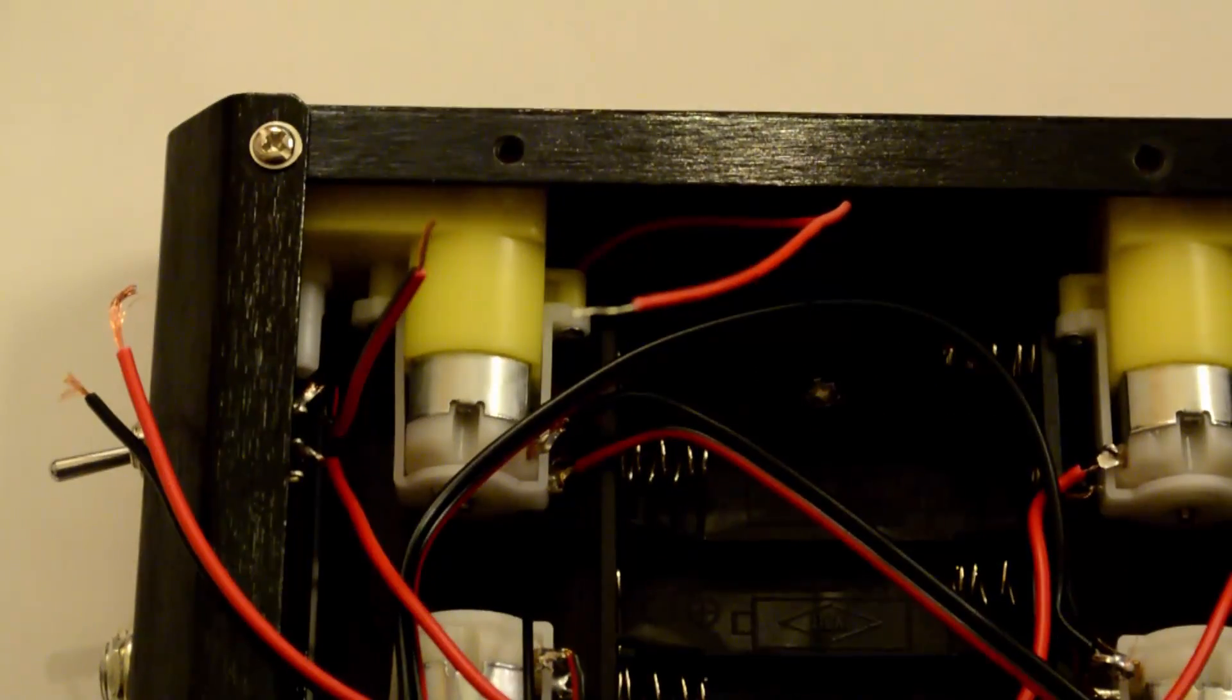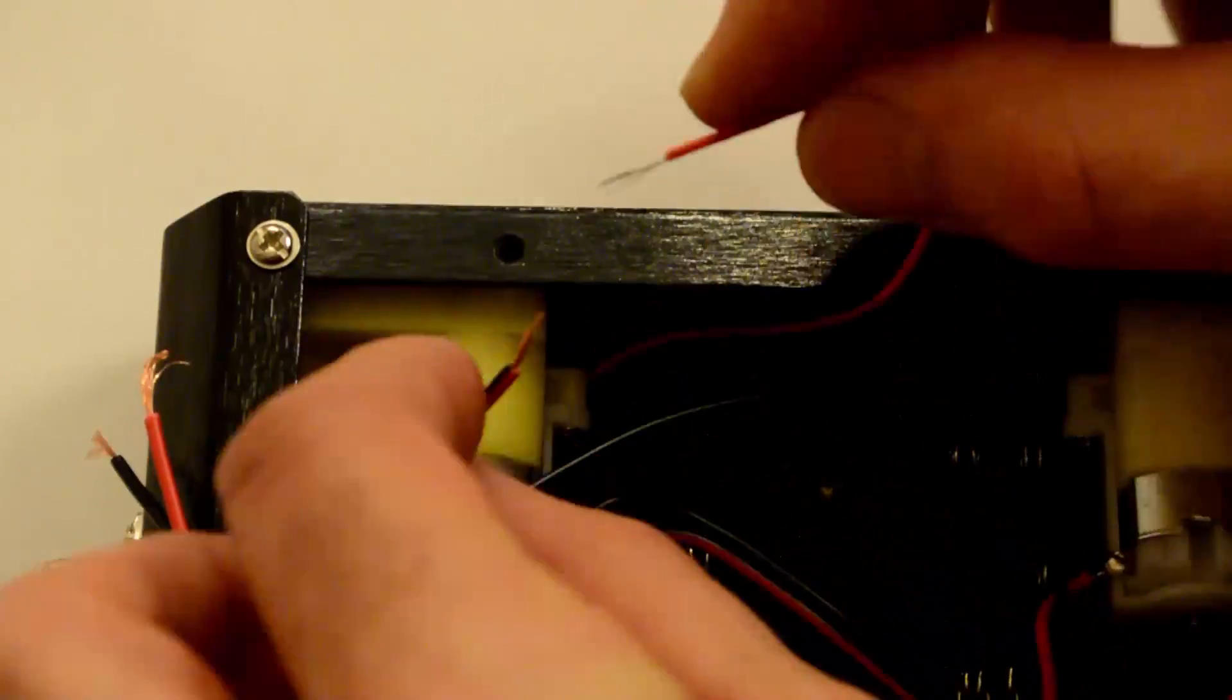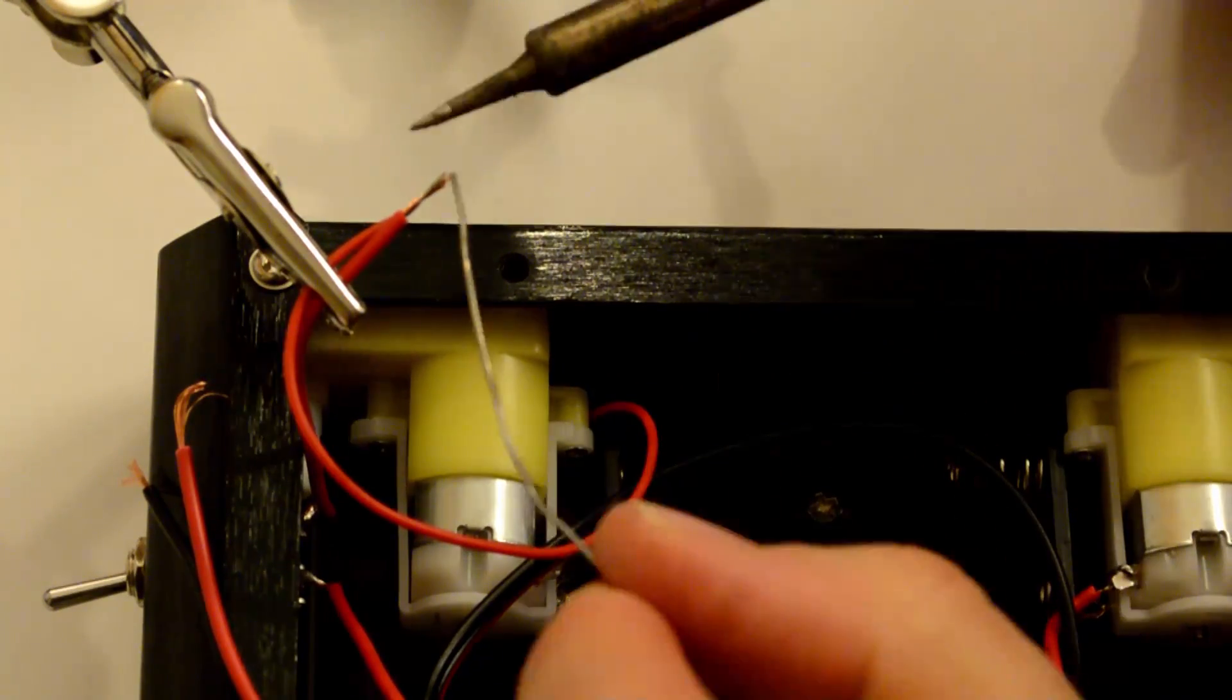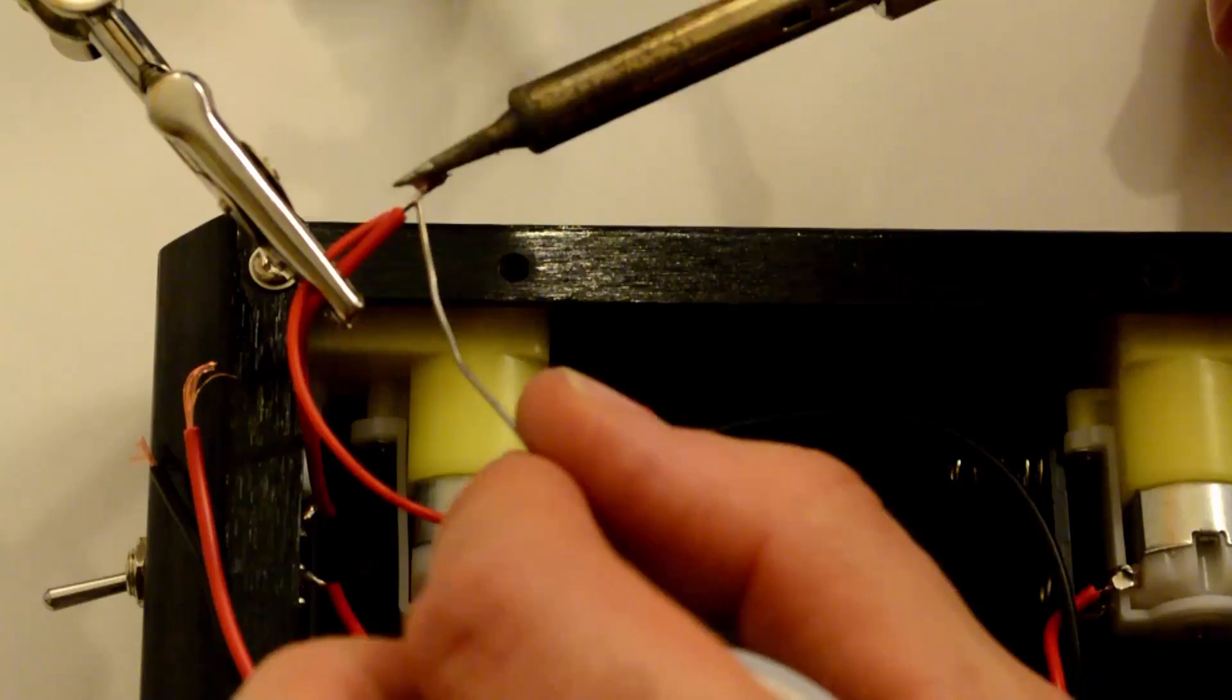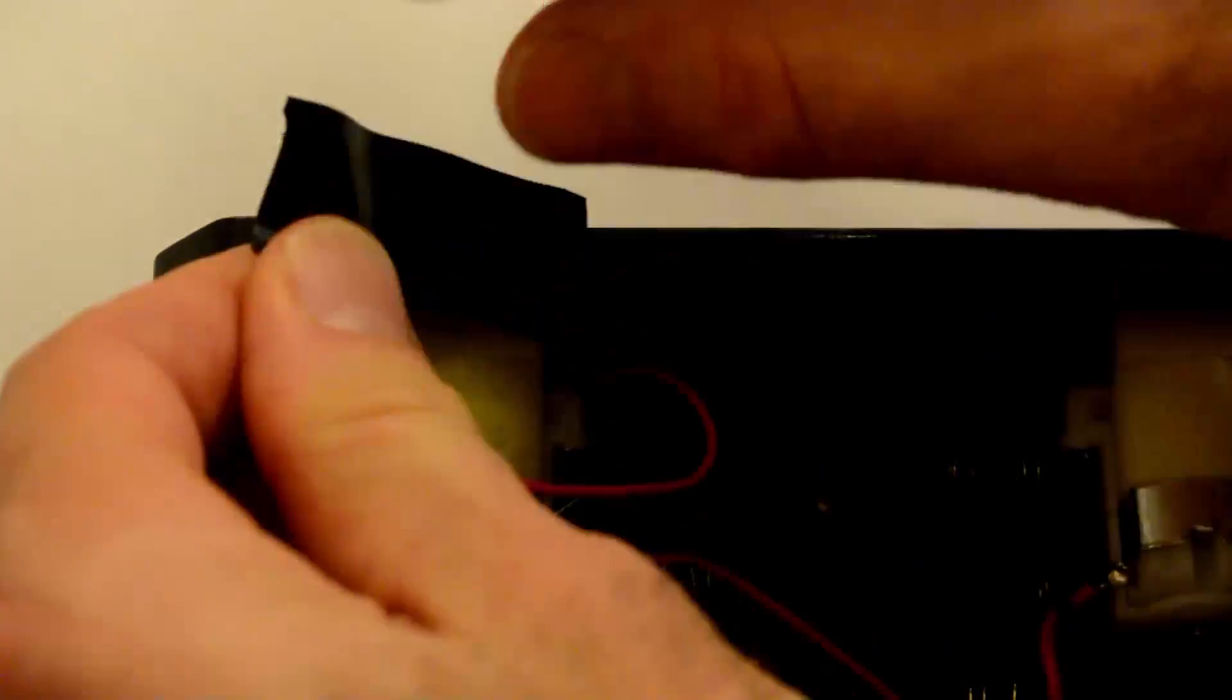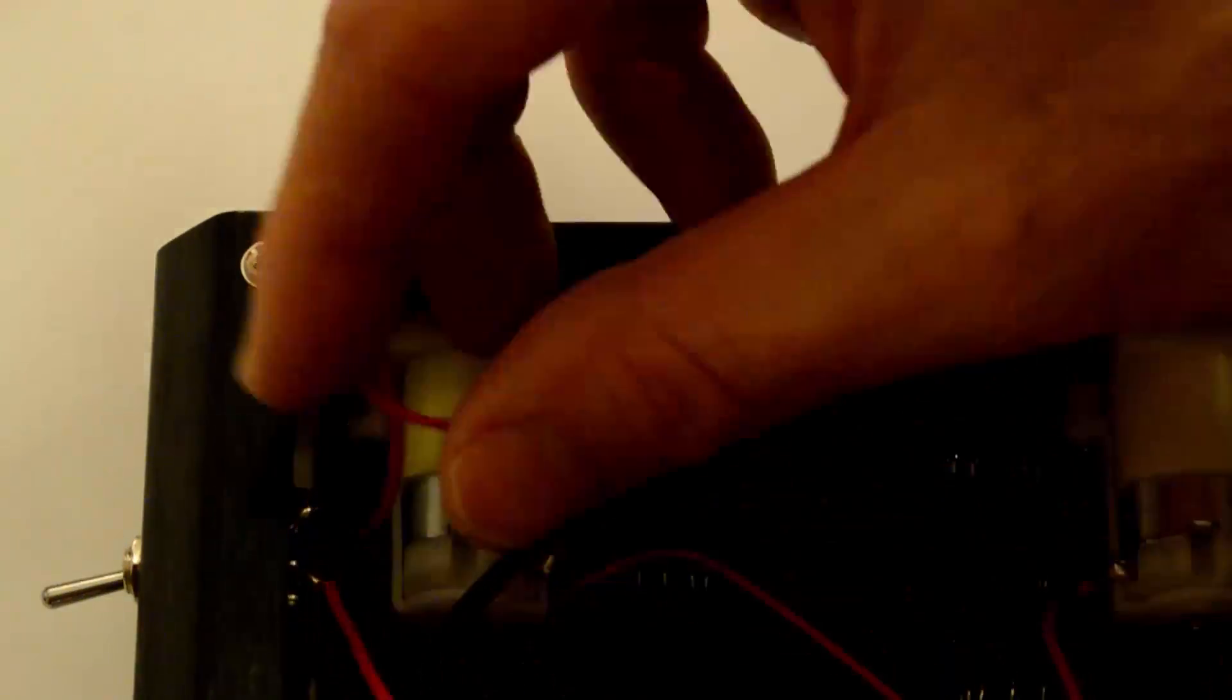Now once you have the base plate screwed in, now you can go ahead and solder together the short wire from the switch to the red wire of the battery pack. When I was done with this, I used some electrical tape to cover over the soldering joint in order to insulate that exposed wire. And then at this point, you can go ahead and install the five AA batteries.